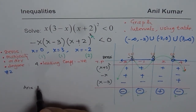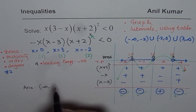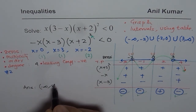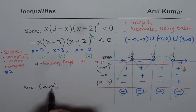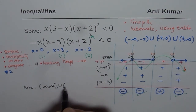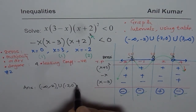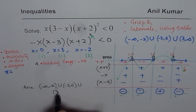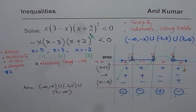Both methods give the same result. Our answer is: the solution is from minus infinity to minus 2 (not including minus 2, since it is a zero), union minus 2 to 0, union 3 to infinity. That is how you write down the solution for the given inequality. I hope that helps — thank you and all the best.